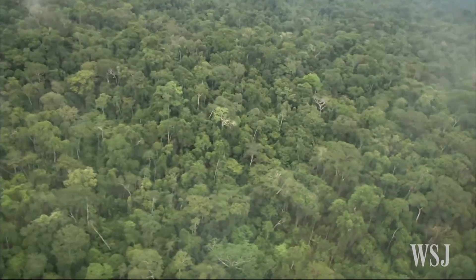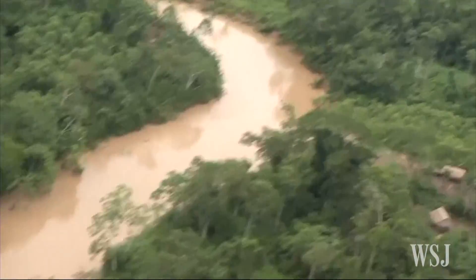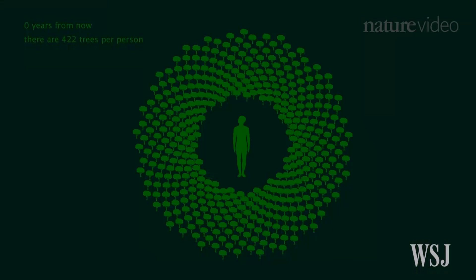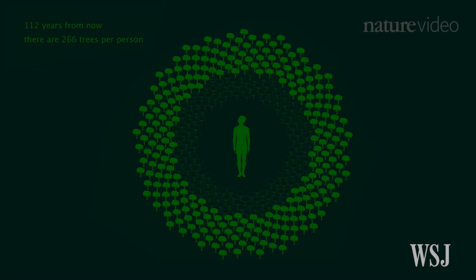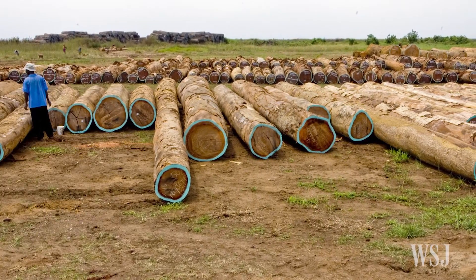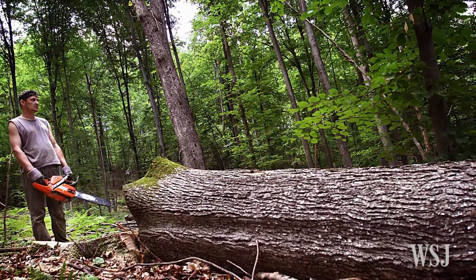While the density of foliage was surprisingly high overall, researchers caution that global vegetation is still in decline. They say human activity, whether through deforestation or general land use, has drastically reduced tree populations. The total number of trees is reduced by about 15 billion every year, and since the start of human civilization, we've reduced the total forest area and total number of trees by about 50 percent.